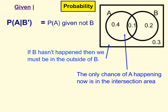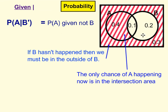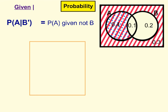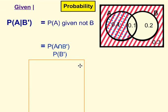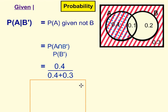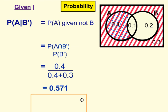Fourth example: probability of A given not B. If B has not happened, then we must be outside of B — everywhere outside of this circle. The only chance of A happening now is where A intersects with not B — that's this region here. This part is also A, but it intersects with B, not with not B, and that's not what we want. So we have A intersection not B divided by the probability of not B. That's 0.4 divided by 0.4 plus 0.3, giving us 0.571 in decimal.